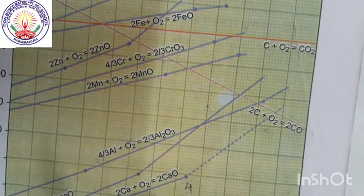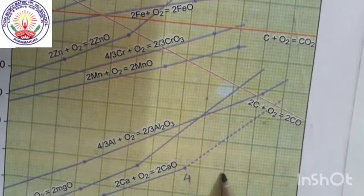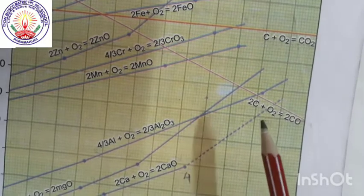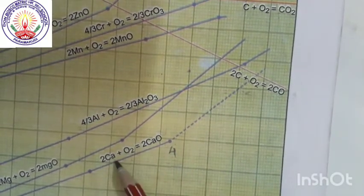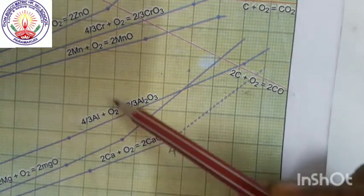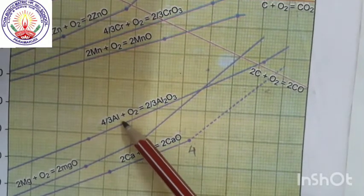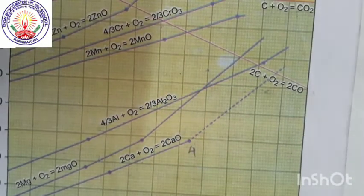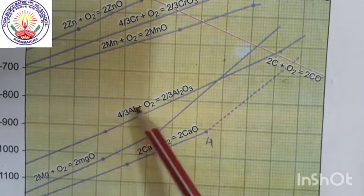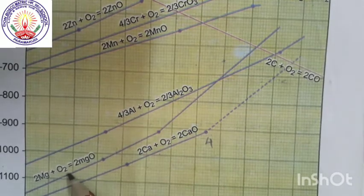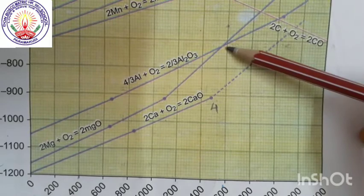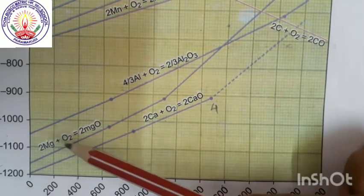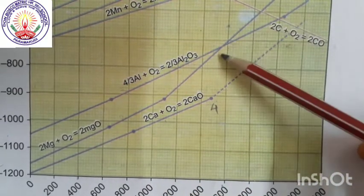Now, we saw which can be used to reduce which — lines A, B, C form. So we have taken F as, say, calcium. Till a certain temperature, we can use calcium to reduce the other metal oxides above it. For magnesium, up to a particular temperature, magnesium can be used to reduce the metal oxides above it. For example, considering magnesium and aluminium: up to their intersection point, magnesium can be used as a reducing agent for aluminium oxide. After this intersection, we cannot use magnesium to reduce aluminium oxide.